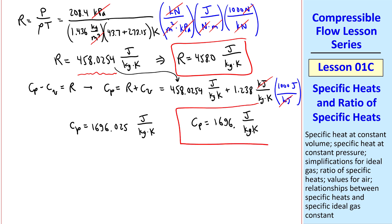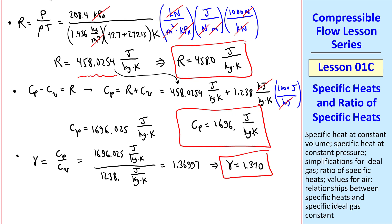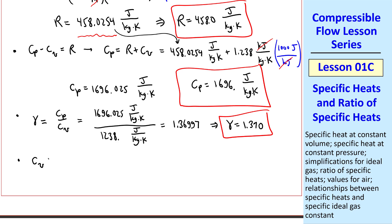Now we can calculate gamma, which is Cp over Cv. And plugging in our Cp and our Cv, the units cancel, of course, and we get 1.36997, or my answer to four digits is gamma is 1.370. We can also try this equation to verify, plugging in our numbers for R and gamma. We get 1238.0 joule per kilogram K, which agrees with the given information.